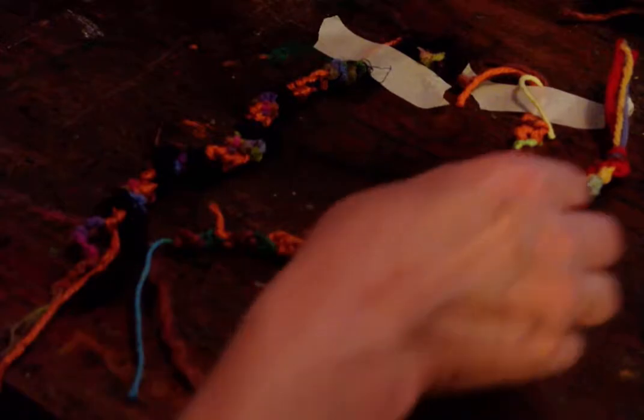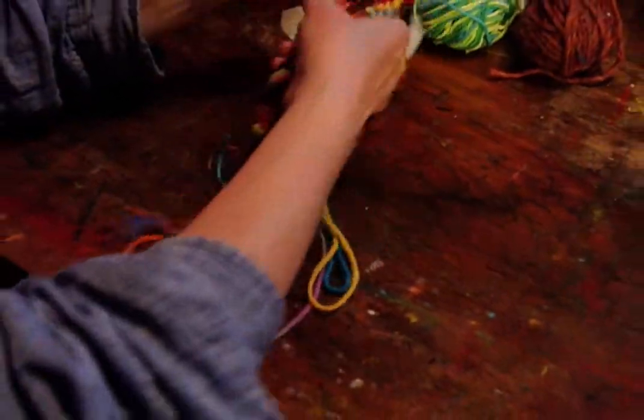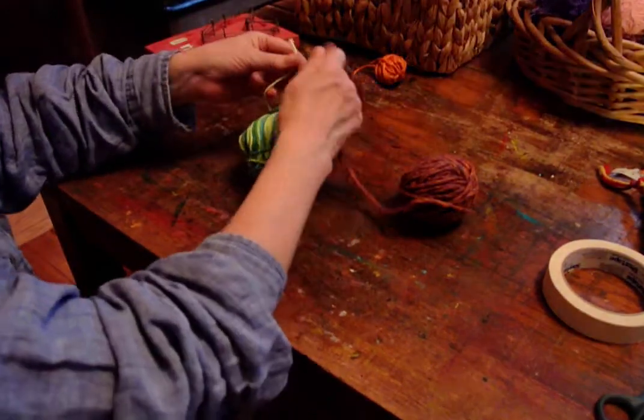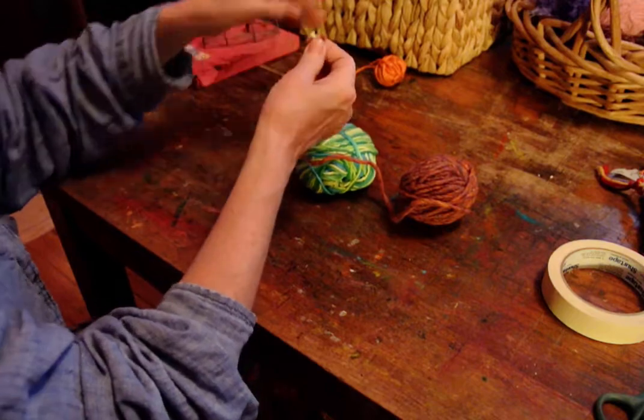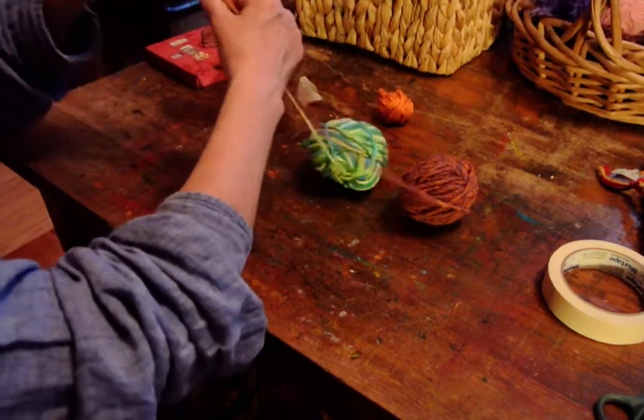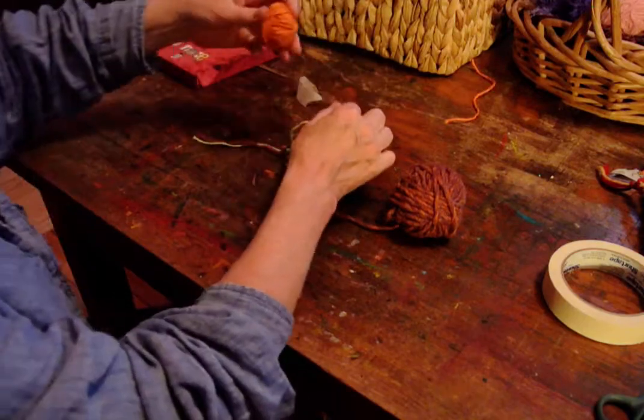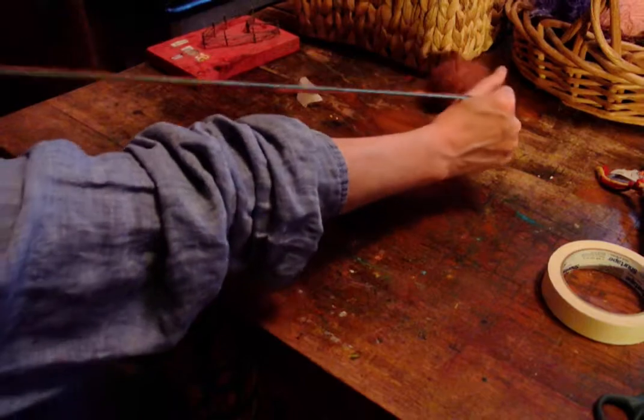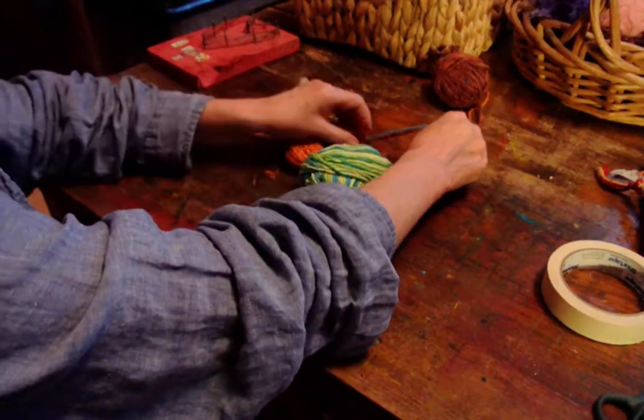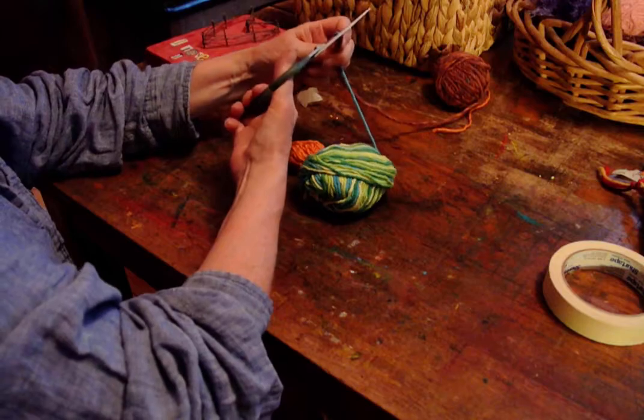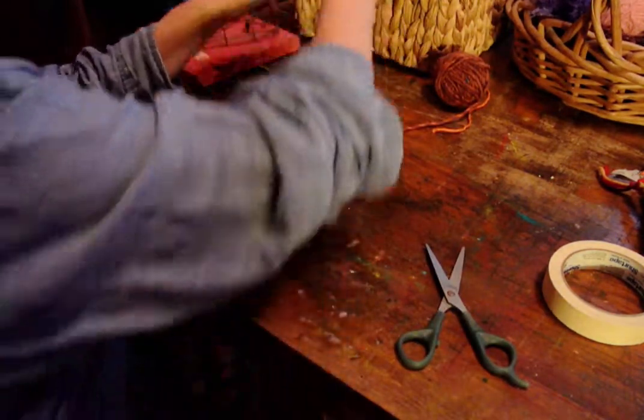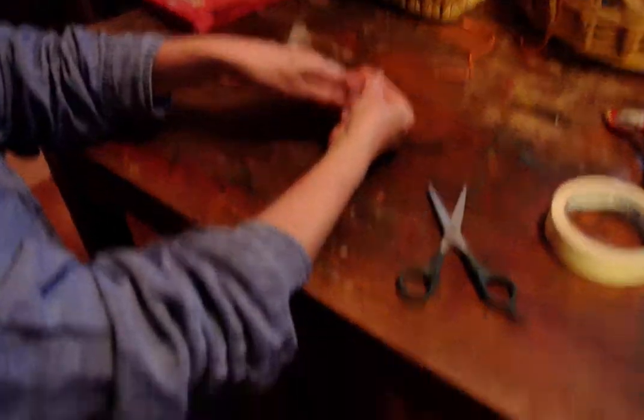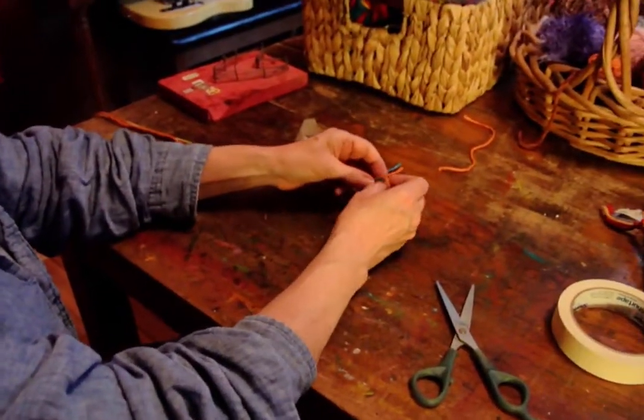And again, since I'm not using actual embroidery floss for friendship bracelets and I'm using yarn, which comes in different widths, I am going to pick three yarns that are about the same width. It's not wrong if they're not the same width, it's just that your bracelet won't be as smooth. There will be one area that's bigger with a certain type of yarn. Your knot will be thicker. Then I'm going to tie that same loop here.